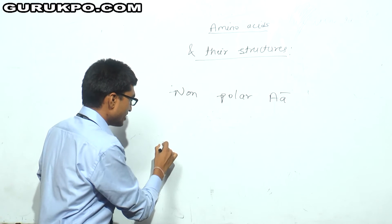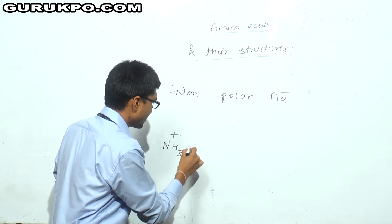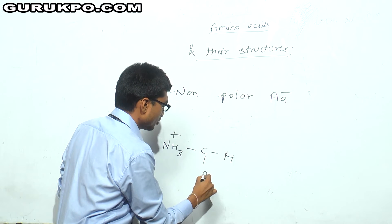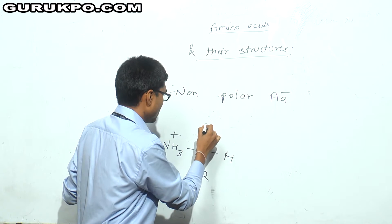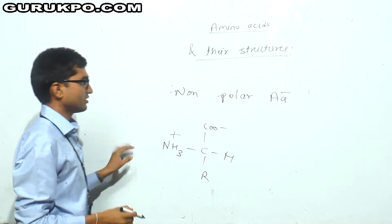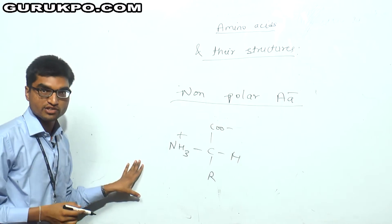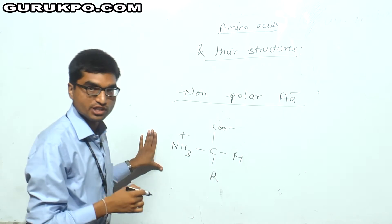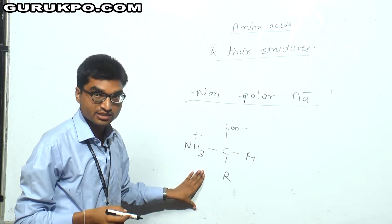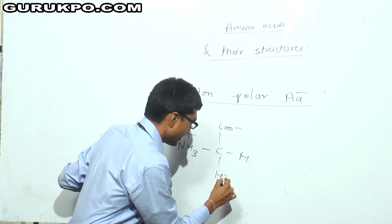First, what will be the basic structure of amino acid? The basic structure will have NH3⁺, H, R group, and a COO⁻ group. The first non-polar amino acid I am going to explain is glycine. In glycine, in place of R there is H.